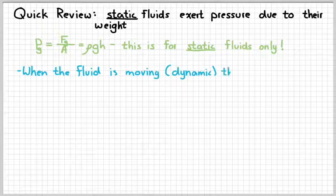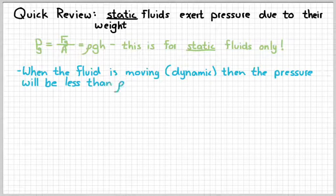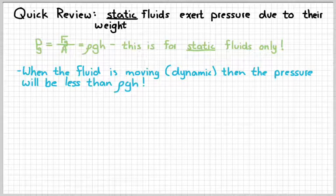When a fluid is moving, which we refer to as a dynamic situation, then the pressure is going to be less than the quantity rho GH. The faster it goes, the lower the pressure is going to be.